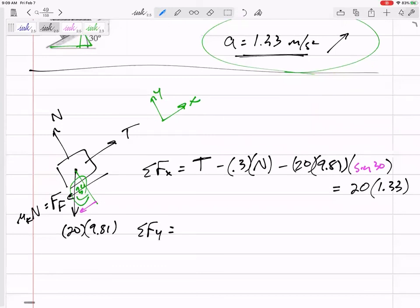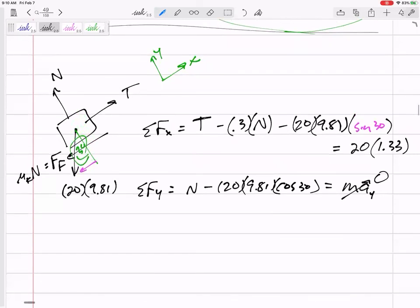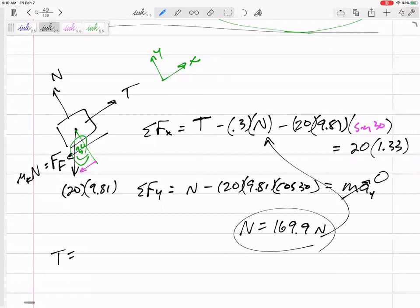Summing the forces in y: N minus 20 times 9.81 cosine 30 equals ma. It equals 20 times a. This is the acceleration in the y. And what is the acceleration in the y? Is it coming off of the incline in the y direction? Is it digging down into the incline? No. So this one is zero. But I like for us to put ma first and then ask yourself, is there any acceleration? And we'll get to a few problems, but don't forget about normal acceleration sometimes. This equation only has one unknown. N would be 169.9. Plug this up there. T equals 176 N.